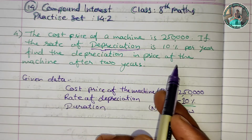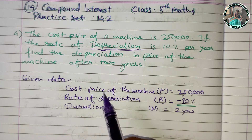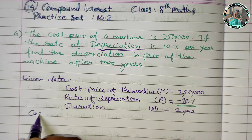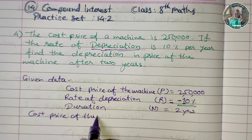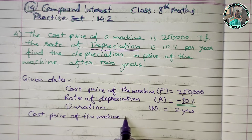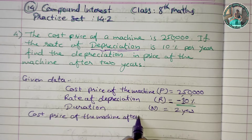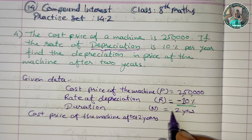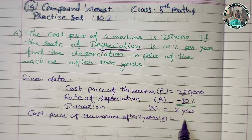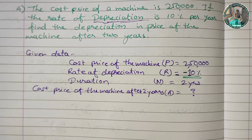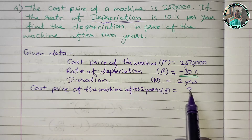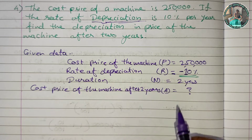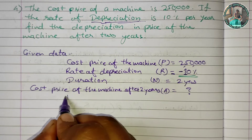We need to find the depreciation in the price of the machine after 2 years. First, we find the cost price of the machine after 2 years, and then we find the depreciation in price.